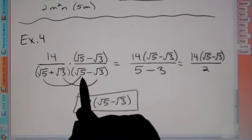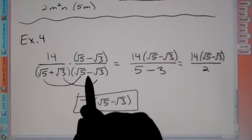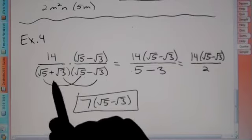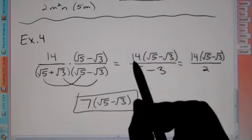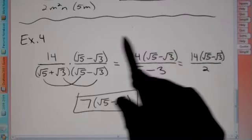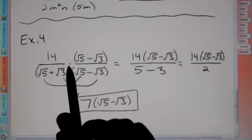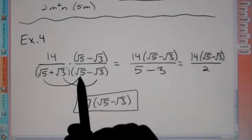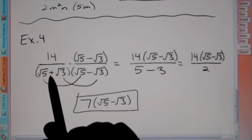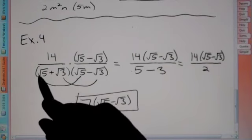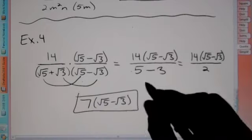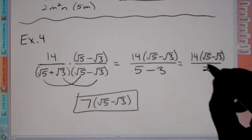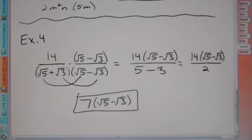So to summarize: multiply by the conjugate — if the denominator has a plus, make the conjugate a minus. Don't distribute on top because we're trying to simplify, not expand. On the bottom, since we used the conjugate, only the first and last terms of FOIL matter — the outer and inner cancel each other out. So 5 minus 3 is 2, and we reduce 14 and 2 to get our final answer of 7(√5 − √3).